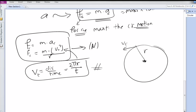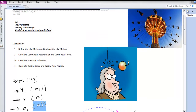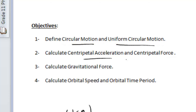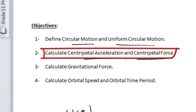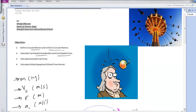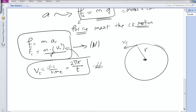So now we have defined circular motion and uniform circular motion, and calculated centripetal acceleration and centripetal force. Now let's move to the gravitational force. When we mention something related to force, we need to remember our genius scientist Sir Isaac Newton and his apple story — although this story is not entirely true.